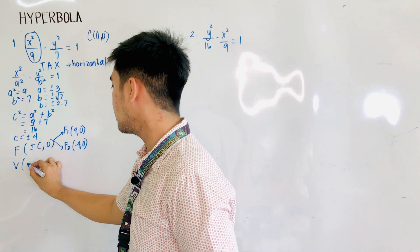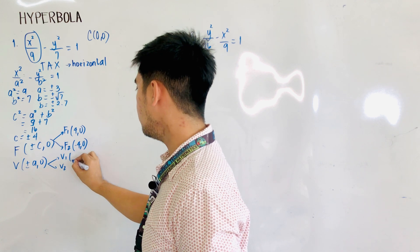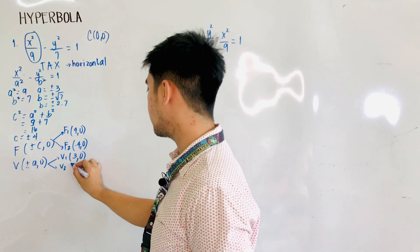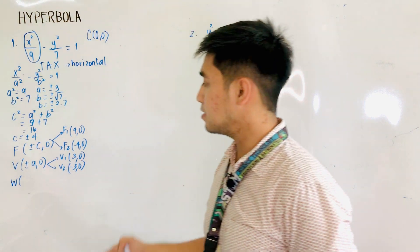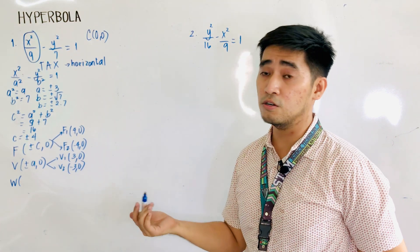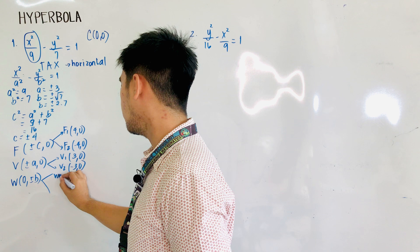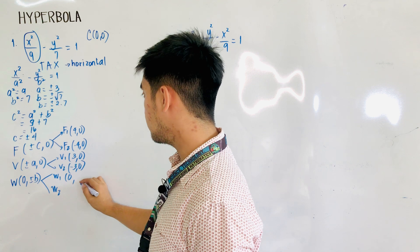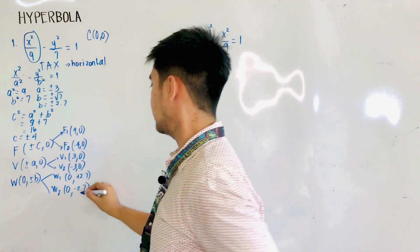For our vertices, that becomes plus or minus a, 0. Therefore V1 is (3, 0) and V2 is (-3, 0). For the co-vertices, since they are located on the y-axis as the conjugate axis, the formula is 0, plus or minus b. So W1 is (0, 2.7) and W2 is (0, -2.7). We are now ready to plot these points.